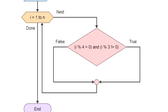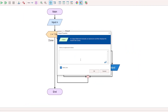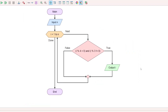The condition block: true AND true — that is a logical AND operation. So: i modulo 4 equals 0 AND i modulo 3 not equal to 0. If both conditions are satisfied, that particular number is printed. The true branch gives the output i.